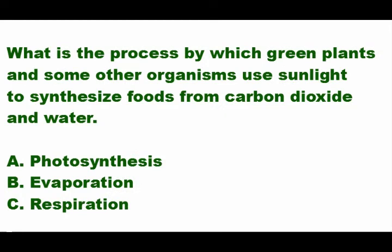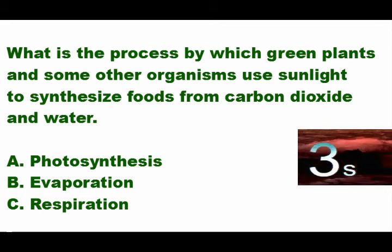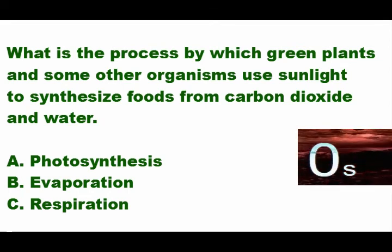Our last question: what is the process by which green plants and some other organisms use sunlight to synthesize food from carbon dioxide and water? Is it A) photosynthesis, B) evaporation, or C) respiration? The answer is letter A — photosynthesis. Photosynthesis is the process by which green plants and some other organisms use sunlight to synthesize food from carbon dioxide and water.